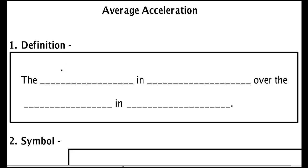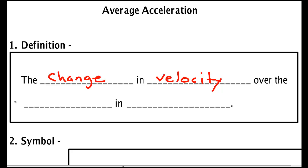We now move to the next concept: the average acceleration. By definition, the average acceleration is the change in velocity over the change in time. Notice I said velocity, not speed. An object can have constant speed and still have acceleration. We'll talk more about this as we go on.